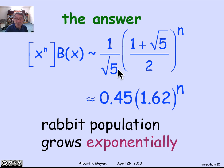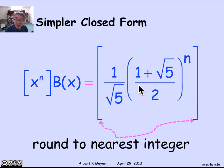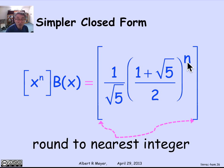In fact, we can state something even more elegant. The n-th Fibonacci number is an integer, and because the second term is less than 1 in absolute value, it's sufficient to compute just the dominant term and round to the nearest integer — these square brackets denote rounding to the nearest integer, and this is an exact equality. To compute the number of rabbits at month n, raise the golden ratio (1 plus root 5 over 2) to the n-th power using fast exponentiation with only about log n squarings, multiply by 1 over root 5, and round to the nearest integer.